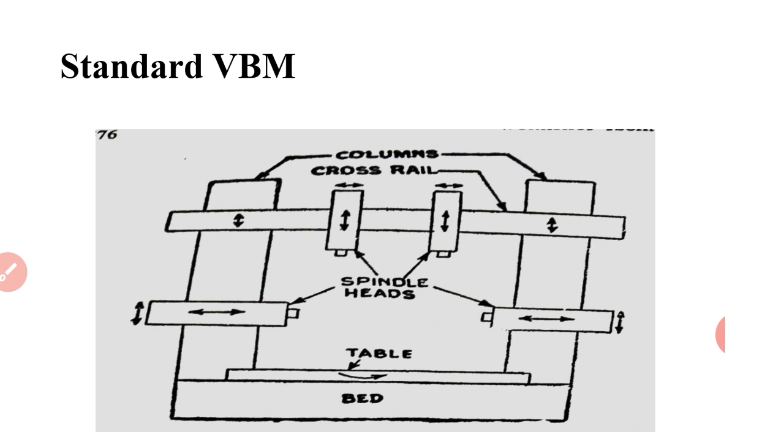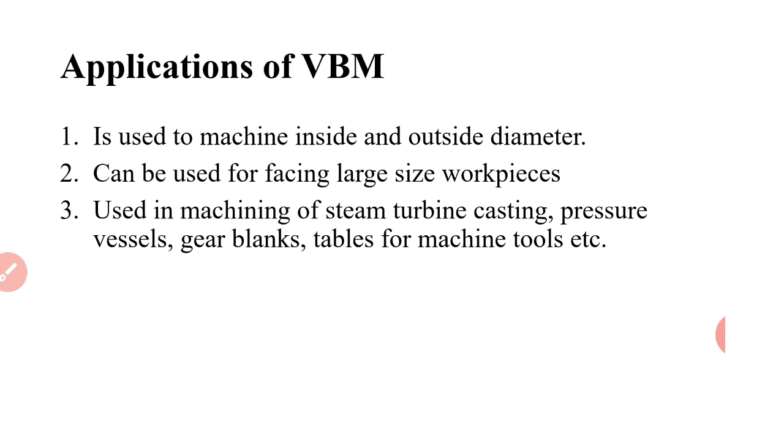This slide shows the standard vertical boring machine with various parts that we have discussed. Now, applications of vertical boring machine: This machine is used to machine inside and outside diameters. It can be used for machining large size workpieces, and it is used in machining of steam turbine castings, pressure vessels, gear blanks, and tables for machine tools.